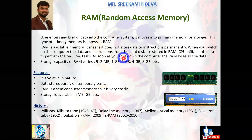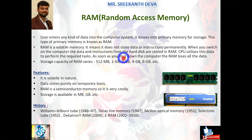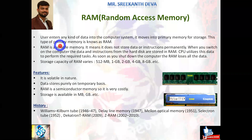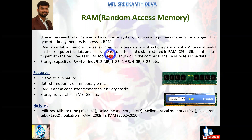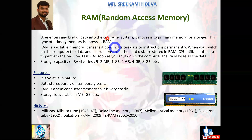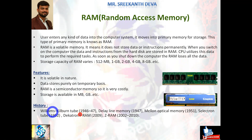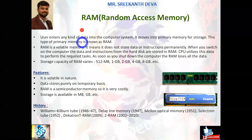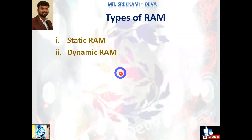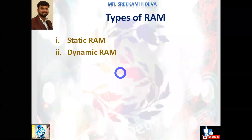We discussed about RAM — RAM stands for Random Access Memory. When the user enters any kind of data into the computer system, it moves into primary memory for storage. This type of primary memory is known as RAM. Its storage capacity is generally in the form of MB and GB. We discussed in detail up to here, including the history where Williams introduced RAM.